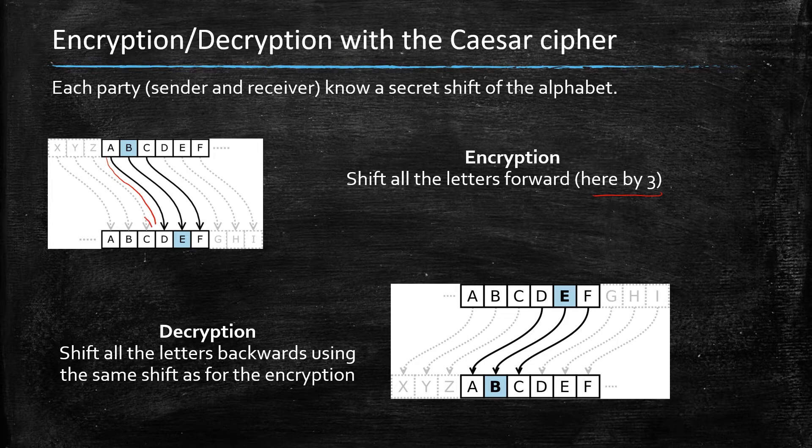So for example, A gets mapped to D and so on and so forth. And for the decryption, then you have to do the reverse operation, which means you shift backwards three. In that case, the D would be mapped back to an A.